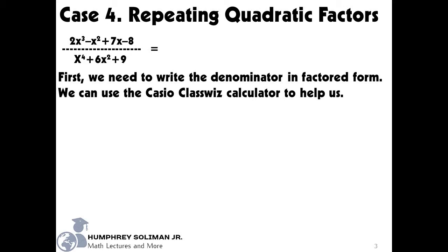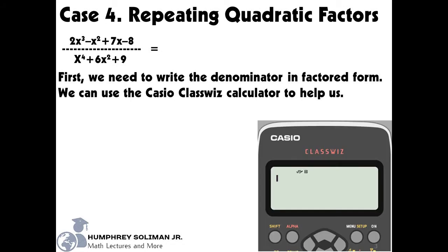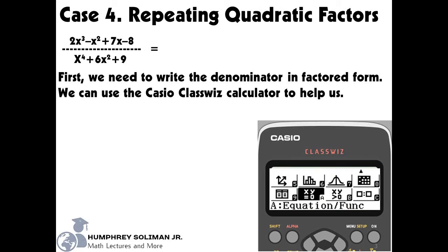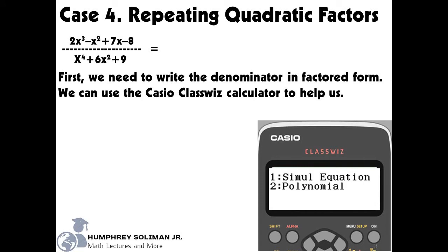We can use the Casio ClassWiz calculator to help us find the factored form faster. But we have to put it in equation mode first. We can do this by pressing the menu key and looking for equation mode using the direction keys. Second, we will choose option number 2, polynomial. Since our denominator is a polynomial in the 4th degree, we will select our desired degree, 4.